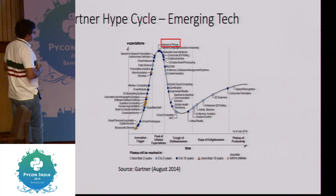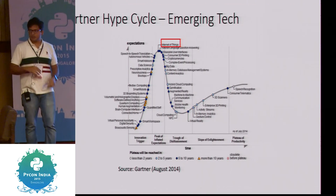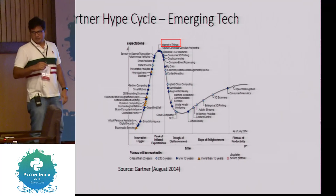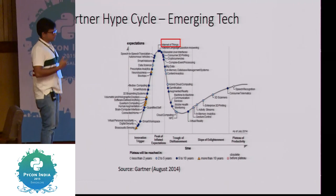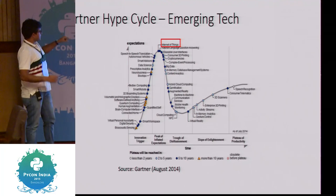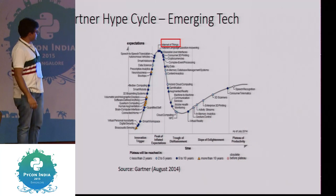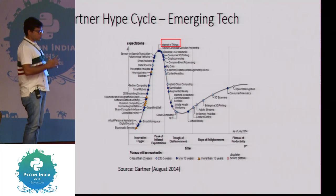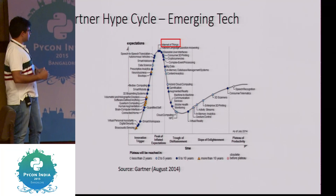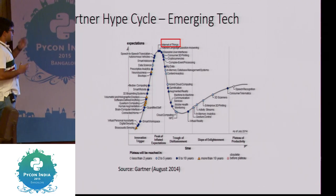This is the Gartner Hype Cycle. Internet of Things sits at the very top — it is the most hyped technology right now according to Gartner. This is why we should be thinking about IoT and getting good at it, because it will really help us in the future.